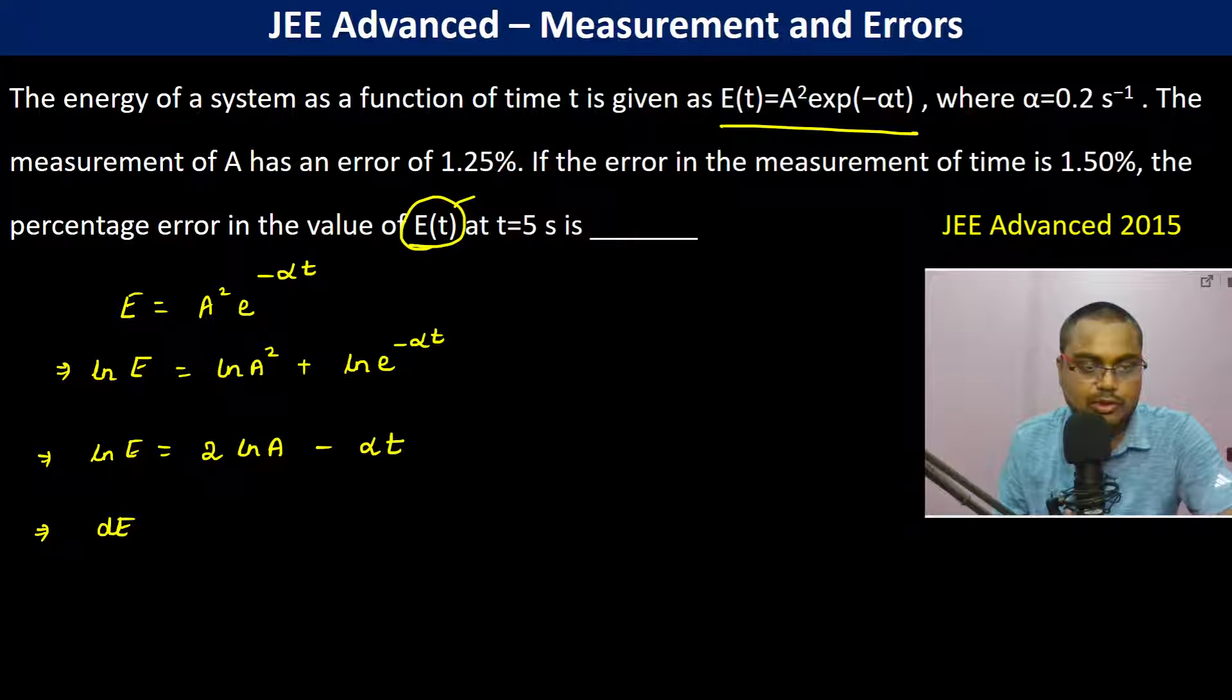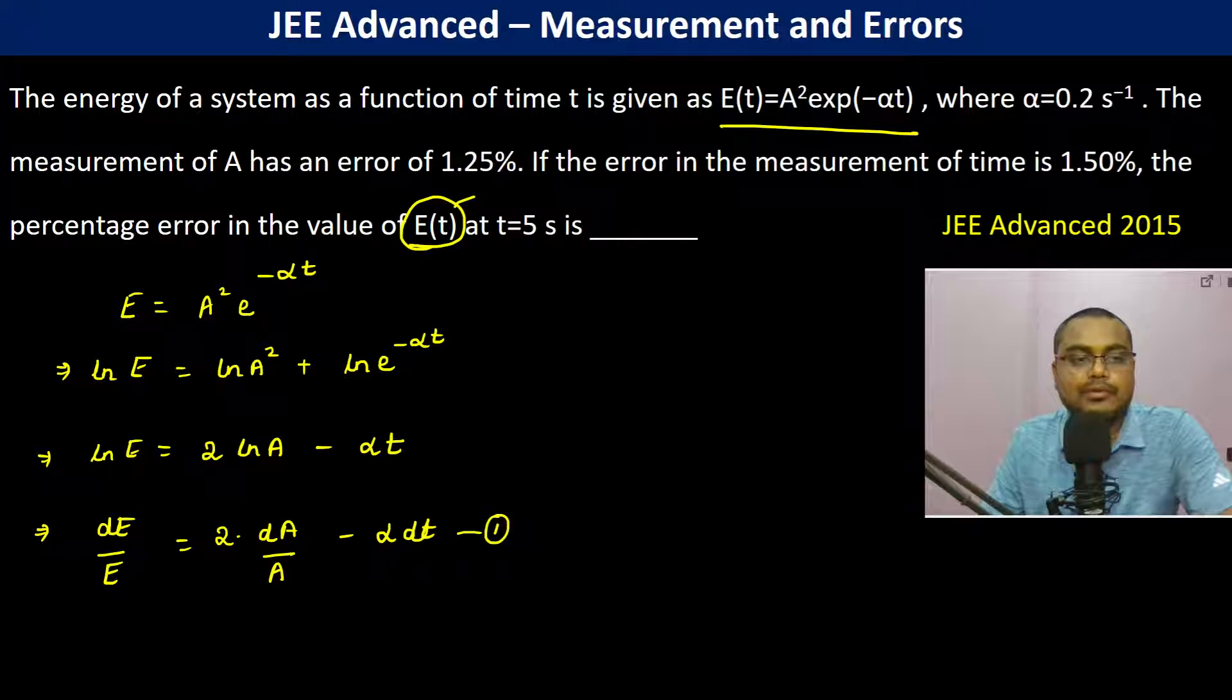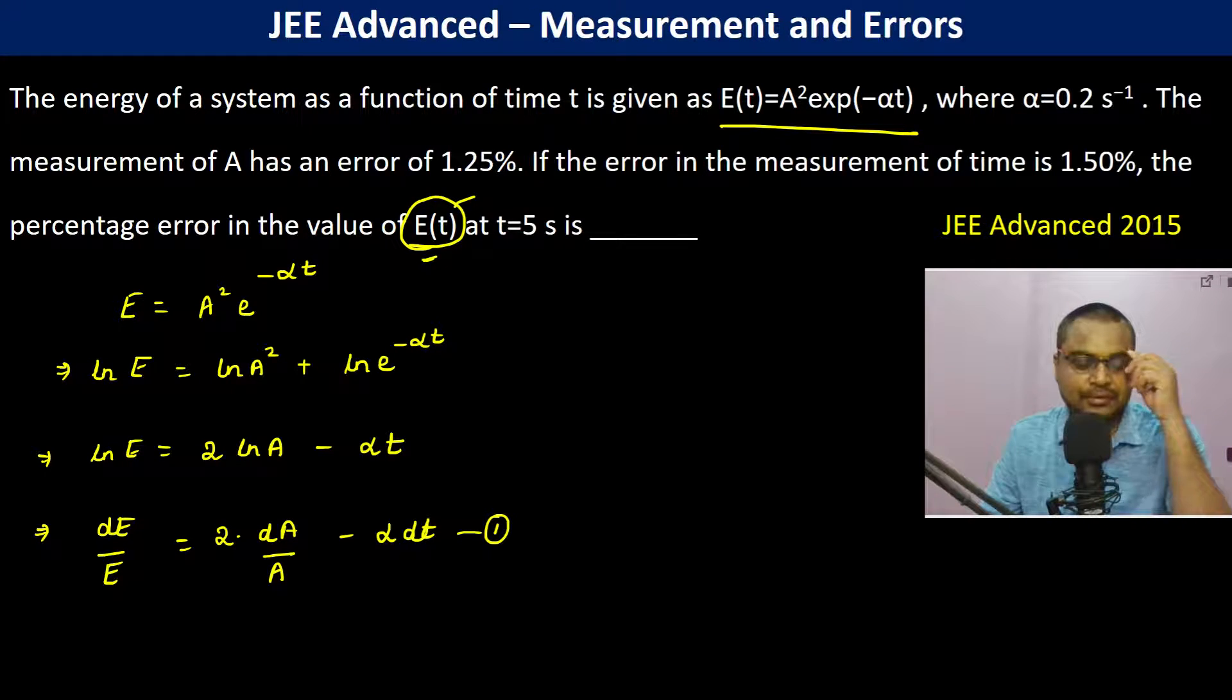Differentiate on both sides. So this is going to be dE by E is equal to 2 into dA by A minus alpha into dt. So now this is the equation. So we have to calculate the percentage error in the value of E(t). So let us first calculate the fractional error.